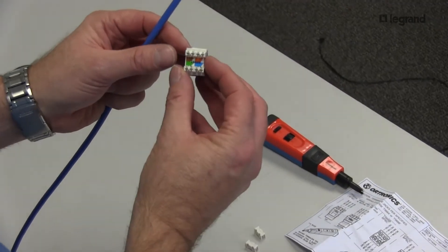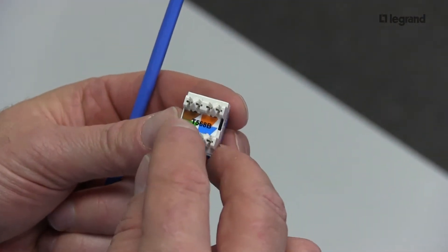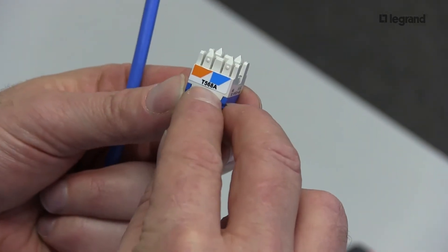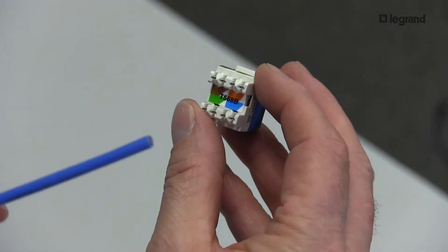So I'm working with a Category 6 KS jack, and if you notice, there are two different color standards. There's a 568B in the center and a T568 on the outside. So be aware of what color standard you're wiring for the rest of your building. Today I'm going to show a 568B.